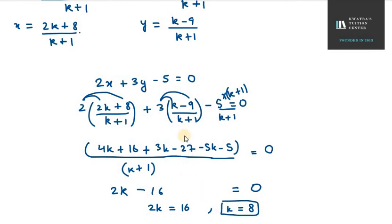k value is known to us now. Now, we can easily find the value for x and y. So, my x will be 2 into k, k is 8 plus 8 over 8 plus 1. It equals 2 into 8 is 16. 16 plus 8 is 24. 24 over 9. Your value for x is 24 over 9.